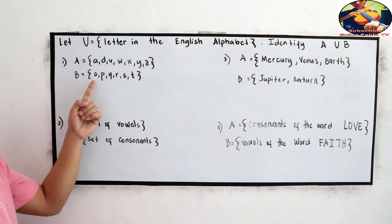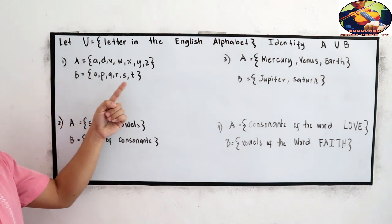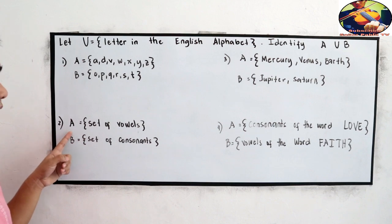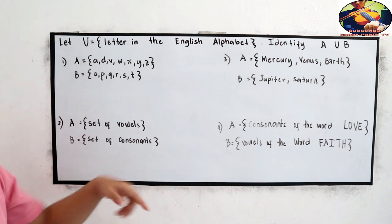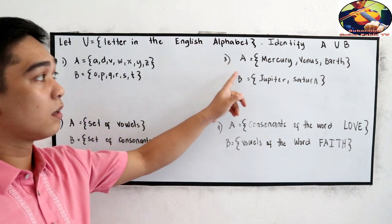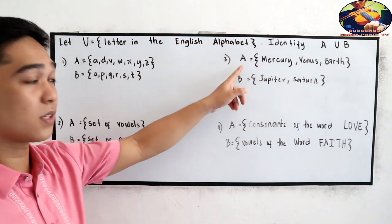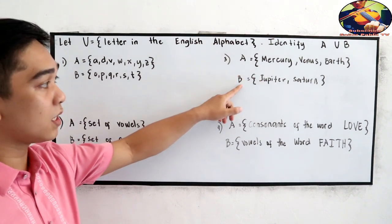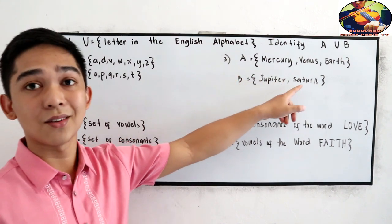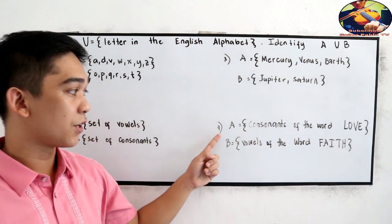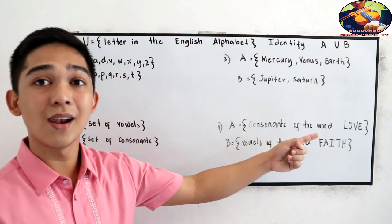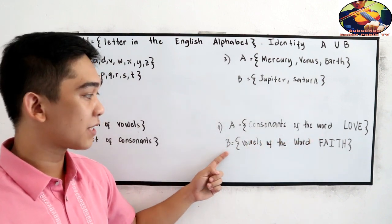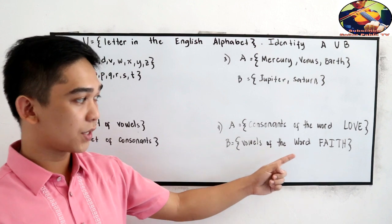Set B, O, P, Q, R, S, T. Number 2, set A is equal to set of vowels. B, set of consonants. Number 3, Mercury, Venus, Earth for set A. And for set B, Jupiter, Saturn. For number 4, A is equal to consonants of the word love. And for set B, vowels of the word faith.